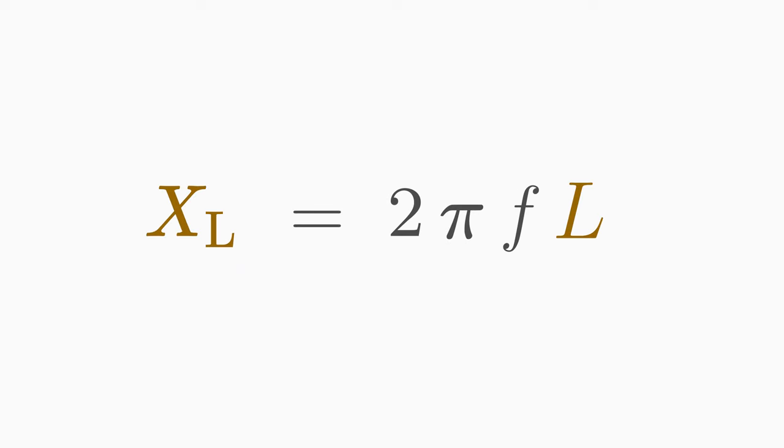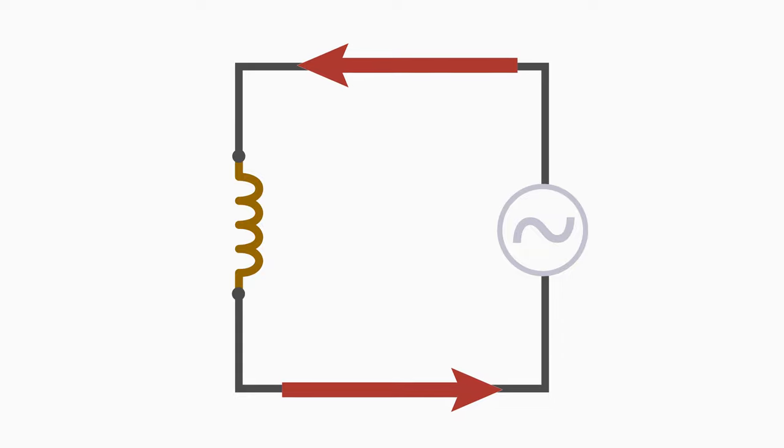If, on the other hand, the AC voltage frequency is very low or even zero, that is if a DC voltage is applied, then the inductive reactance also becomes zero. The coil does not impede the current at all, which is equivalent to a short circuit.